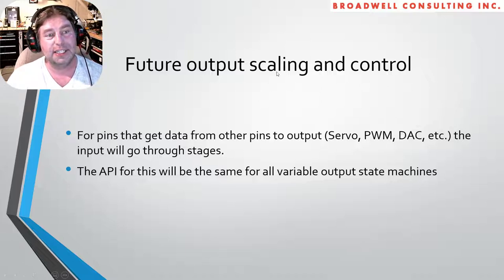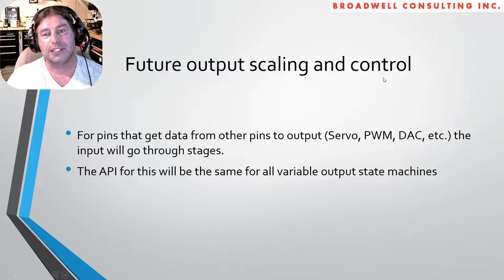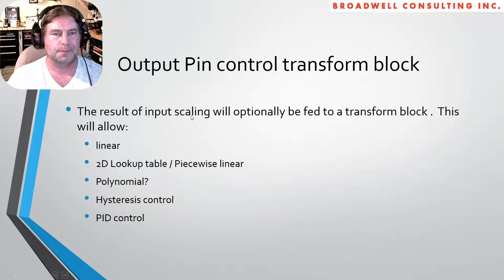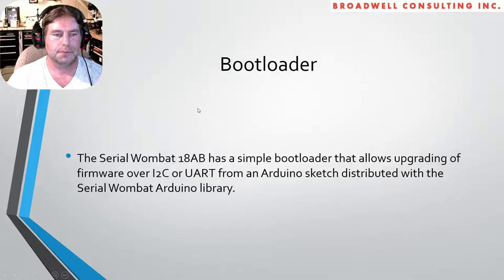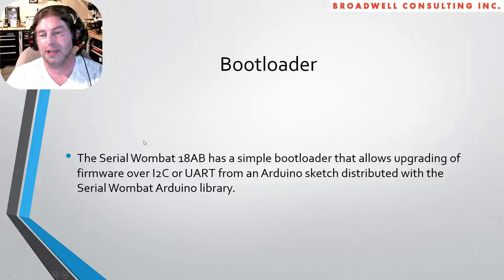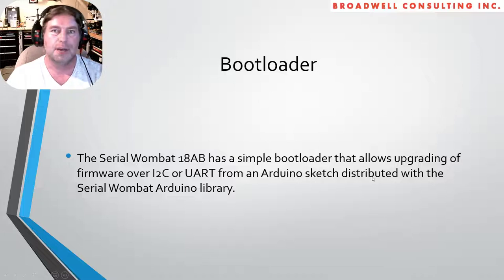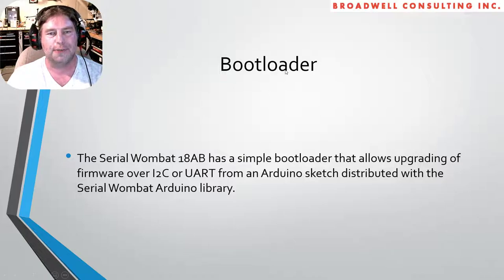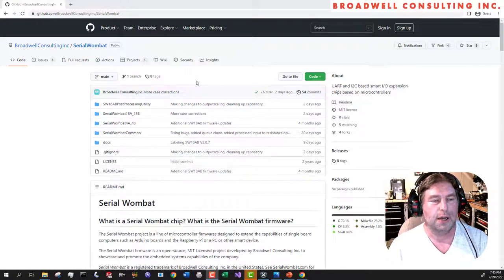This says 'future' because I was talking to Microchip Fellows back in December — the future is now. There's also output scaling and control so that we can modify those values as they go out to the pins. There'll be a whole other video on that. We have a bootloader — a simple one that allows upgrading firmware over either I²C or UART. You can do it from an Arduino sketch, but now the Wombat Panel also supports direct downloading of a hex file, and there's a command-line interface on PC or Raspberry Pi that can also download a hex file.